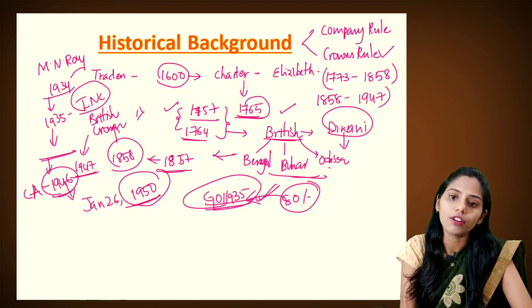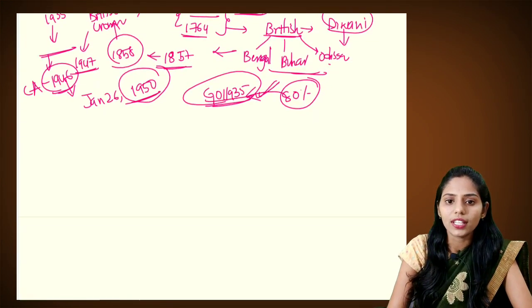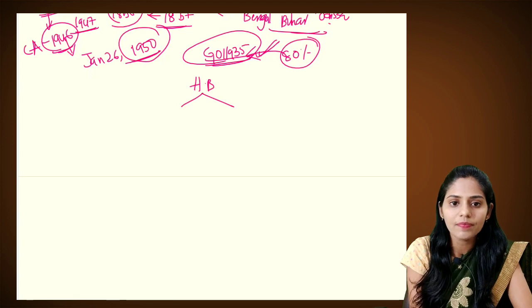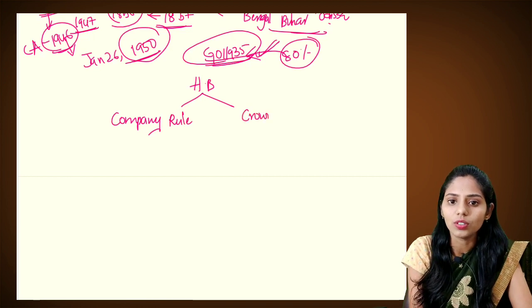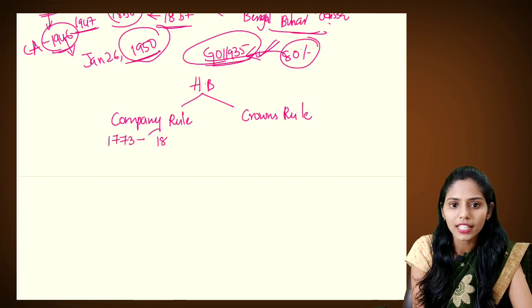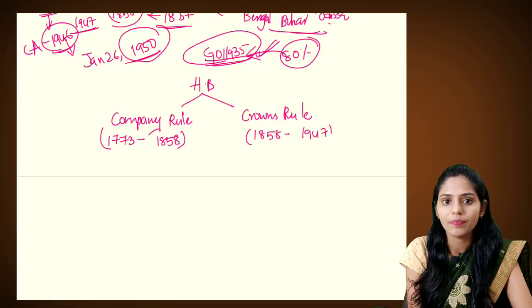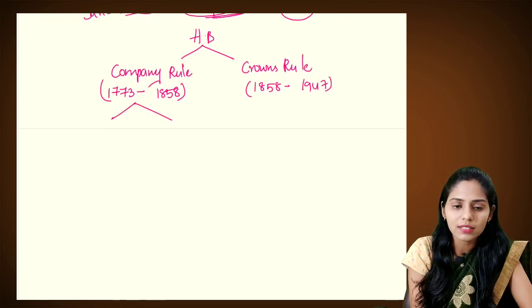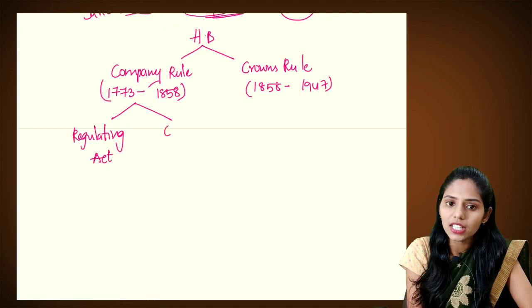The company rule ran from 1773 to 1858, and the Crown rule ran from 1858 to 1947. Let us draw a flowchart to understand this historical background. There are two types of laws: company rule and Crown rule. Company rule can be further classified into two types: the first is regulating acts, and the second is charter acts.